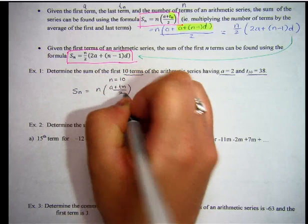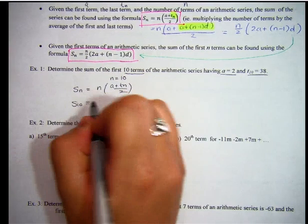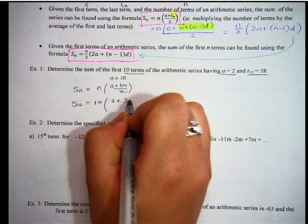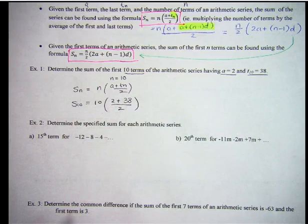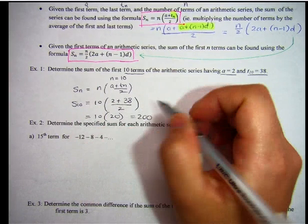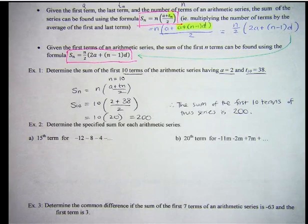Then we can just use the formula SN equals N, A plus T, N over 2. So I'm going to sub in 10 for N, I'm going to sub in 2 for A, and 38 for TN. And the sum ends up being 200. Therefore, the sum of the first 10 terms of this series is 200.